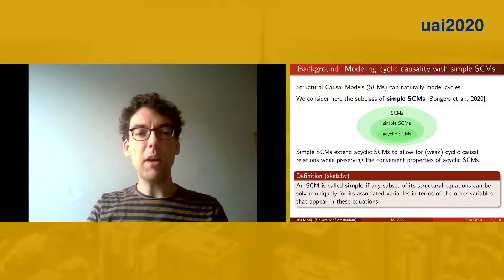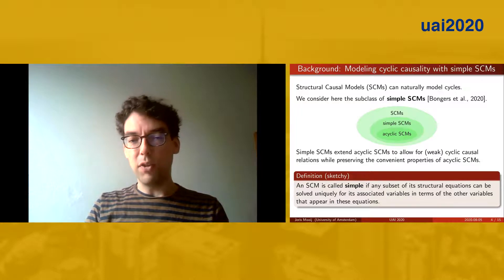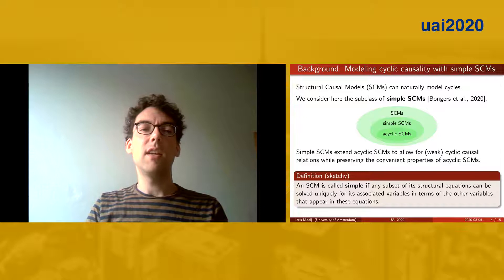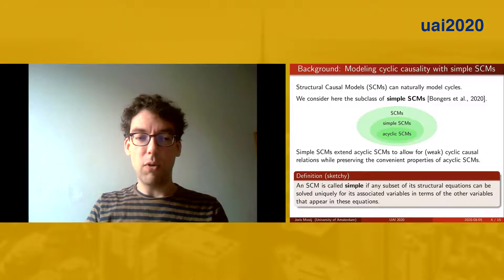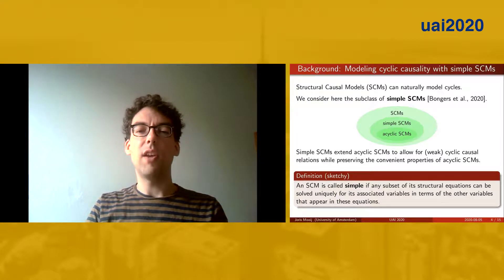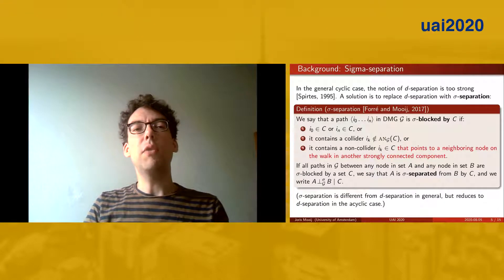You can think about simple SCMs as extending the class of acyclic SCMs to allow for cyclic causal relations while preserving many of the convenient properties that acyclic SCMs have. Here's a sketchy definition. We call a structural causal model simple if any subset of its structural equations can be solved uniquely for its associated variables in terms of the other variables that appear in these equations.